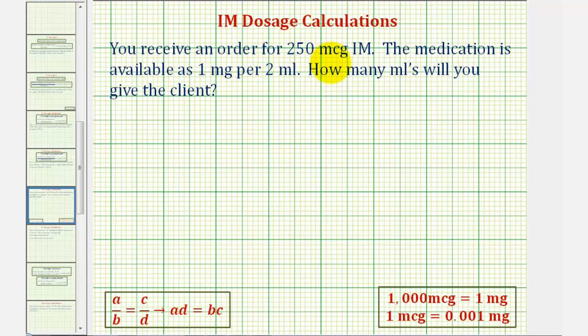You receive an order for 250 micrograms IM. The medication is available as one milligram per two milliliters. How many milliliters will you give the patient?